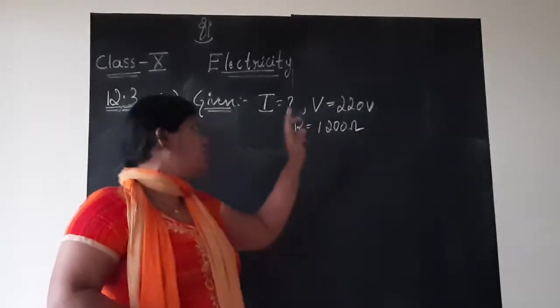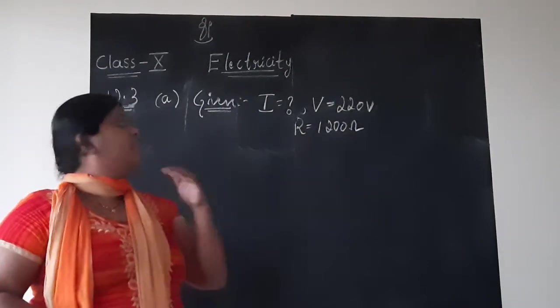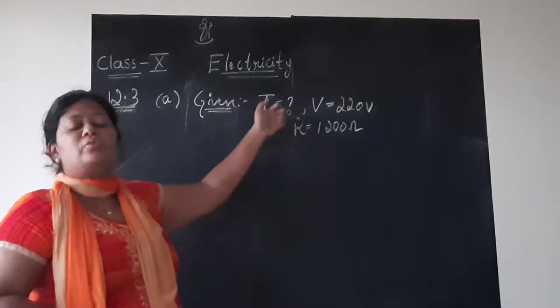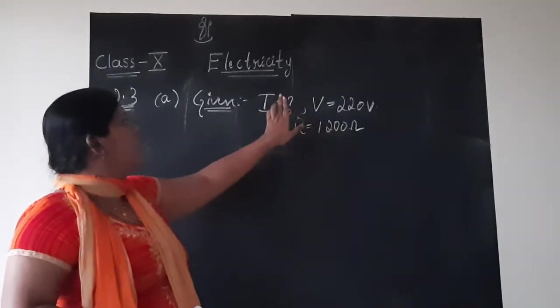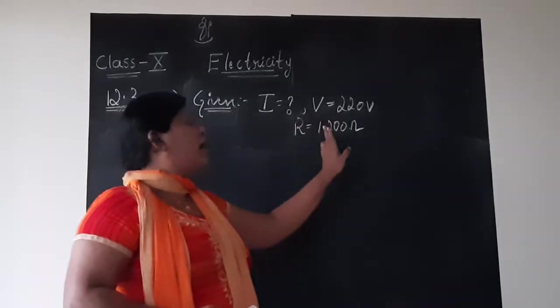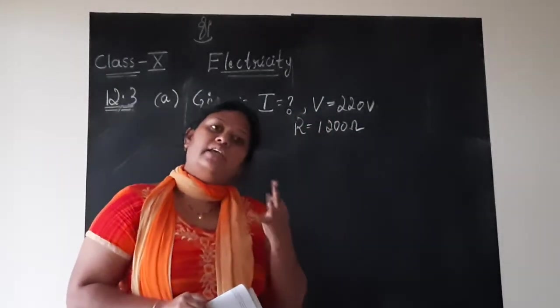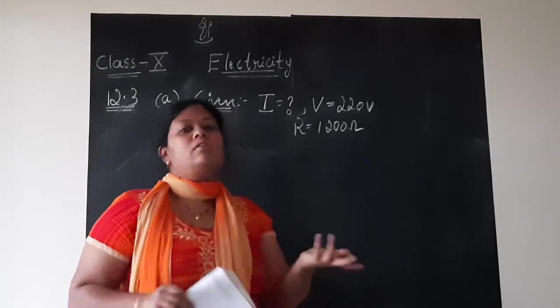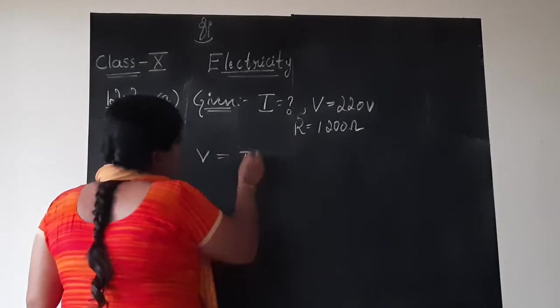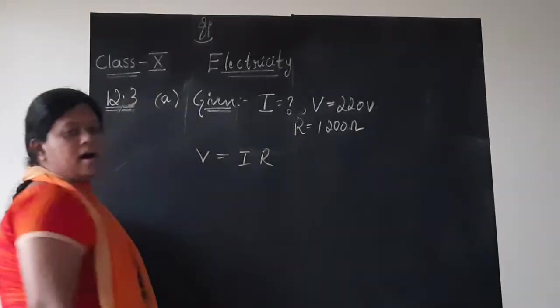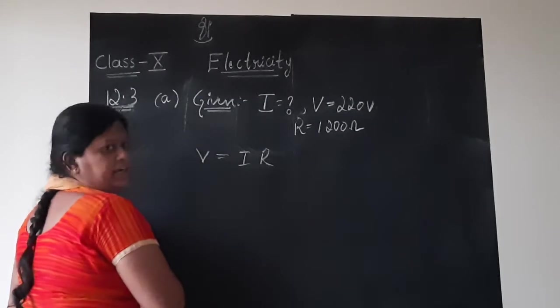This is how you should write the given data. Learn it everywhere. V equals 220 Ohms, R equals 1200 Ohms. Along with this only you should write because we will not be valuing your papers. It is outside us. So they go through each and everything here. So write the given data in a proper way. I we don't know, V we know, R we know.